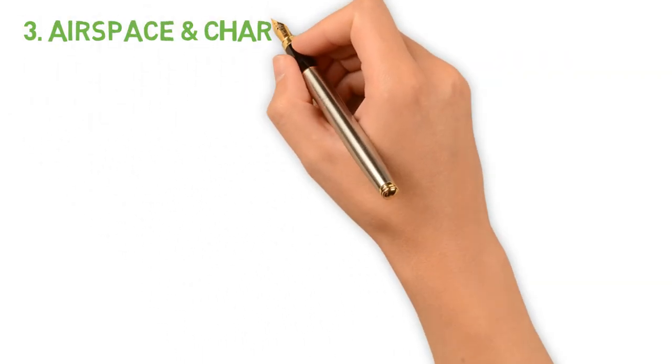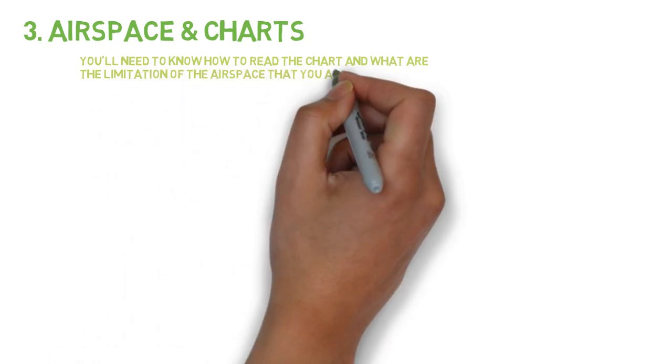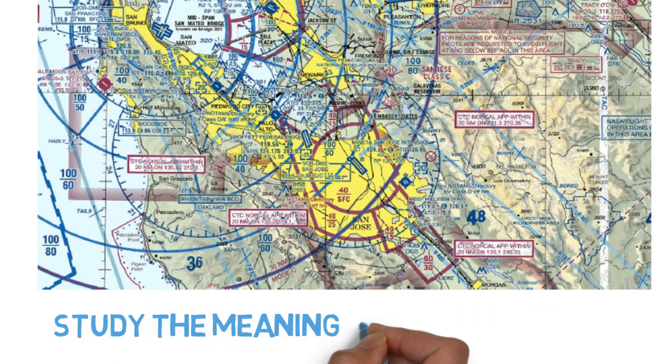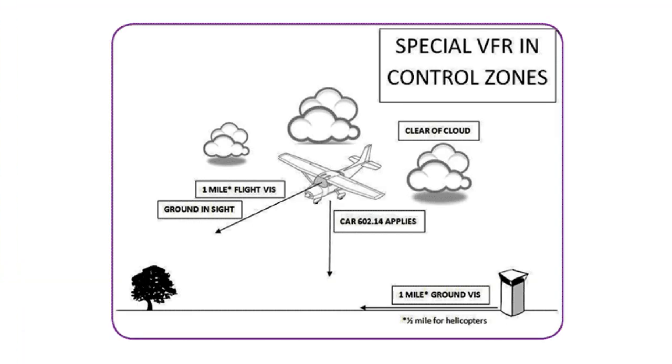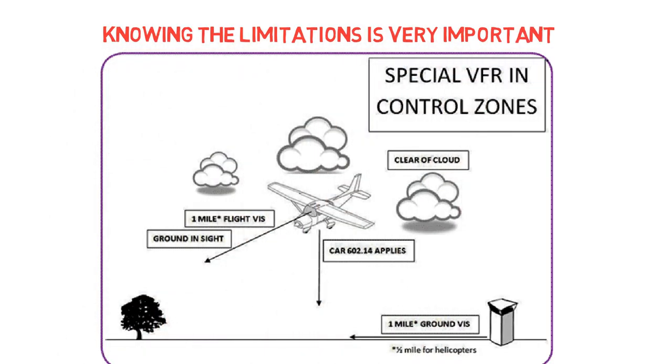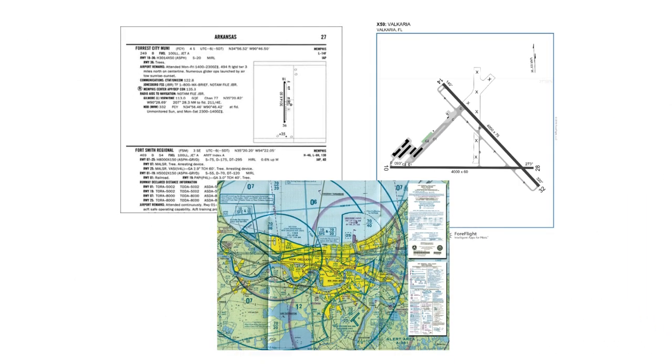Number three is airspace and charts. You'll need to know how to read the charts and what are the limitations of each airspace and things like that. You need to know all the symbols. Knowing the limitations is very important. There are charts like chart supplements and area charts because you'll need to know what information is at the airport you're going to. The examiner will ask you what does this mean, what does that mean.